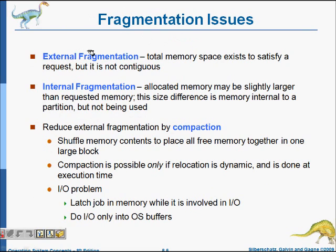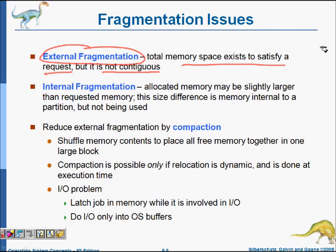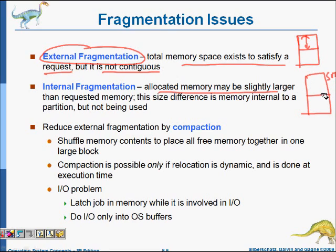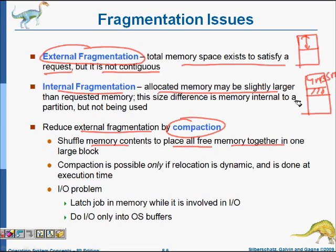External fragmentation means total memory space exists to satisfy a request but it is not contiguous. Internal fragmentation occurs when allocated memory is larger than needed — for example, allocating a 5 MB chunk when the program is only 4 MB wastes 1 MB. We can reduce external fragmentation through compaction: shuffle memory contents to place all free memory together into one large chunk, but this is not always possible due to I/O problems.